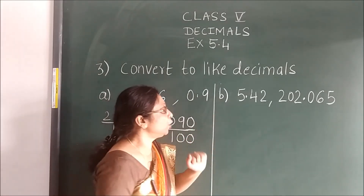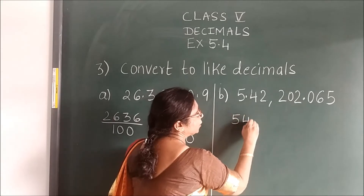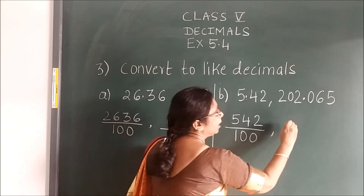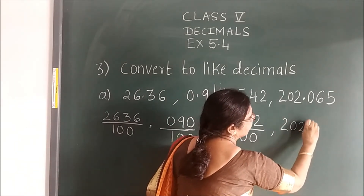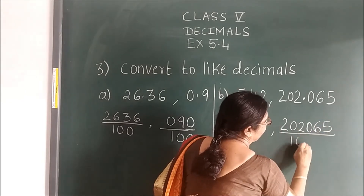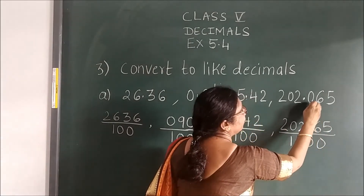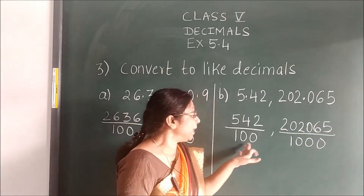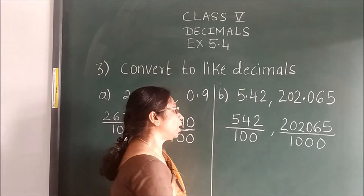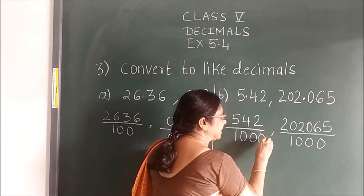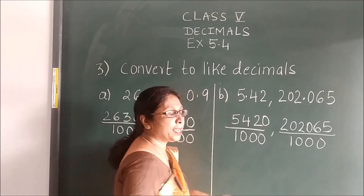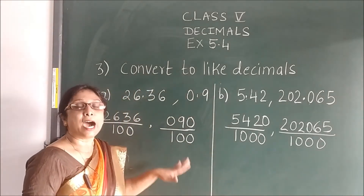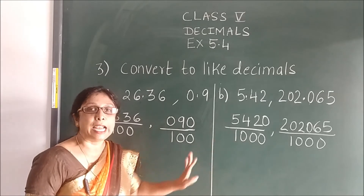Now in the similar way, here you see 5, 4, 2. First you will remove the point. After point 2 numbers, you will put 2 zeros. Here you will write the up number as it is without point. After point 3 numbers — 1, 2, 3 — so 3 zeros. Now you see denominator has 3 zeros here, but here there are only 2 zeros. To make it equal, you have to add 1 zero. And the same number of zeros you will add up. Now you can see the denominators are same. That means unlike decimal is converted into like decimal.